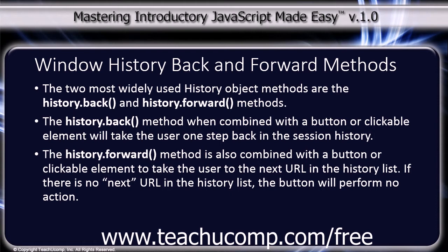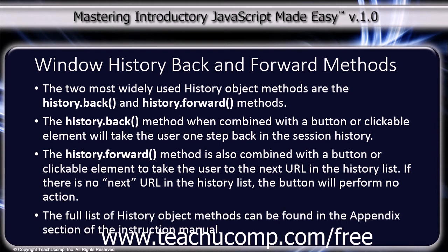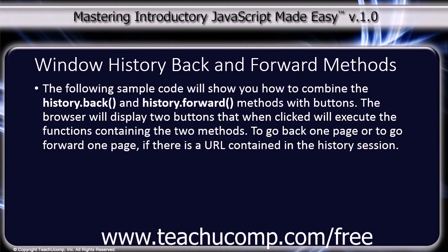If there is no next URL in the history list, the button will perform no action. The full list of history object methods are contained in the appendix section of the instruction manual. The following sample code will show you how to combine the history.back and history.forward methods with buttons.